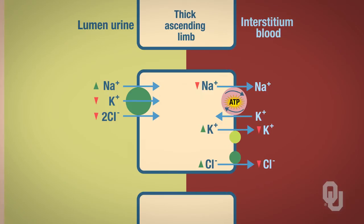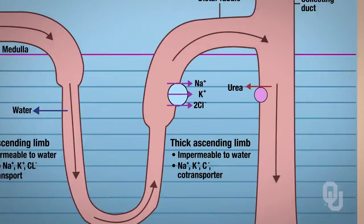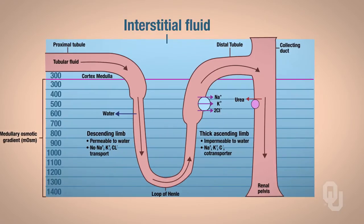So here on the ascending limb, we've reabsorbed sodium, potassium, and chloride ions. By reabsorbing them, we take them out of the lumen. That is going to alter the interstitial fluid for a period of time until it gets into the plasma, causing the interstitial fluid to become hypertonic.